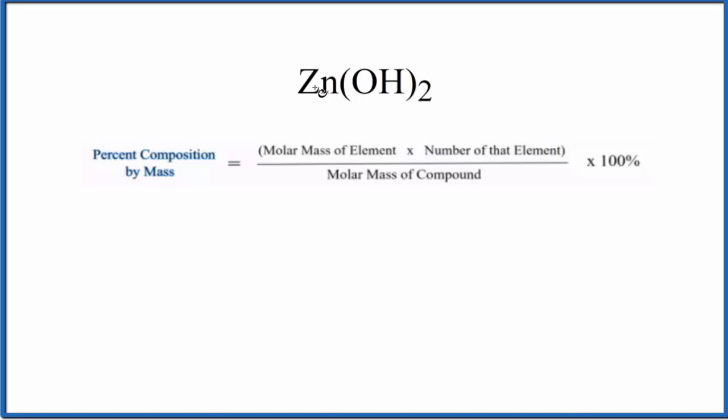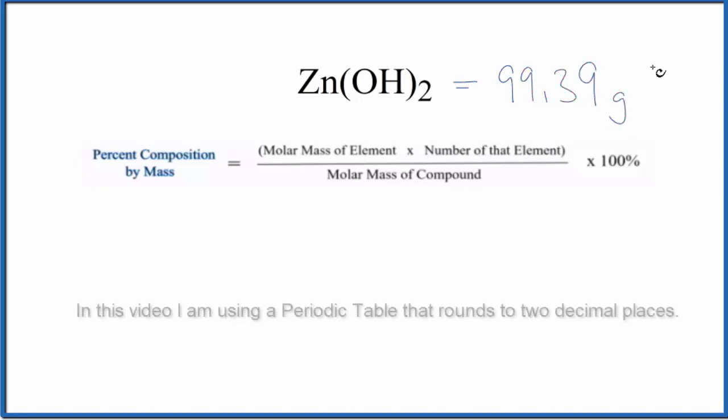We add the atomic mass for each one of these elements up here. We'll end up with the molar mass of 99.39, and the units are grams per mole. Once we have the molar mass that will be our denominator.